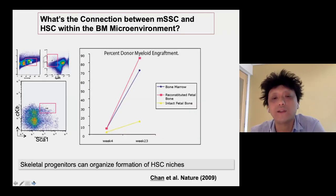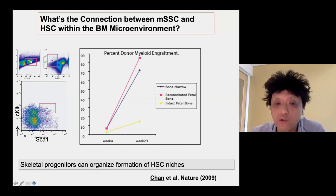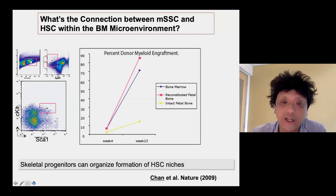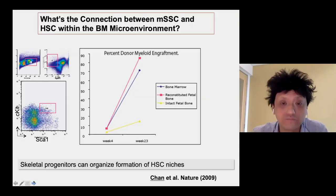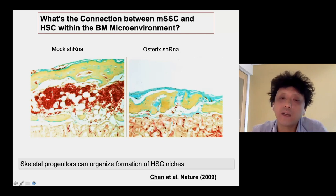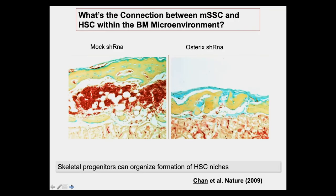To summarize, there are different types of progenitor cells in the bone marrow. One of these appears to be a type of bone progenitor that is unique in its ability to make an entirely new bone complete with a microenvironment that can support blood-forming stem cells. This system allows us to look at the cell types involved in bone marrow formation and the genetics of hematopoiesis in adults.